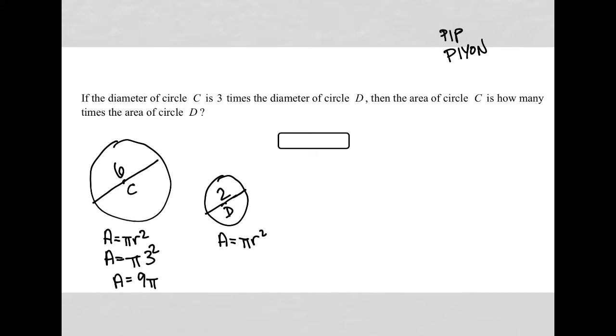Doing the same thing here with circle D, I have an area that's equal to pi. The radius is 1, so 1 squared. So therefore, I'd have an area that is just pi. So the area of circle C is 9 times this area of circle D. So my answer here would be 9.